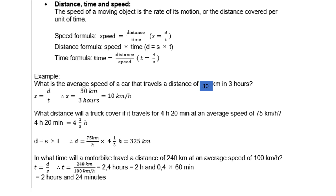In what time will a motorbike travel a distance of 240 kilometers at an average speed of 100 kilometers per hour? We want time, so time equals distance over speed: 240 over 100, which is 2.4 hours. Converting 0.4 hours to minutes — multiply by 60, because there are 60 minutes in an hour — gives 2 hours and 24 minutes.